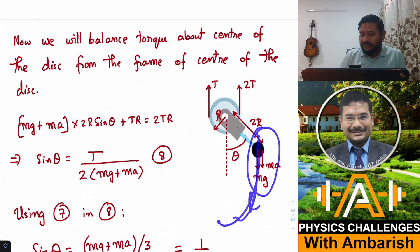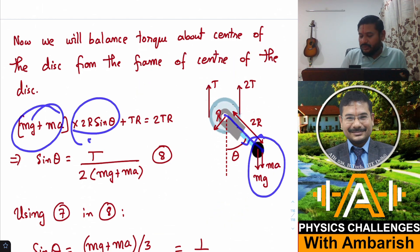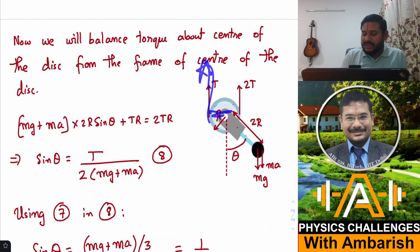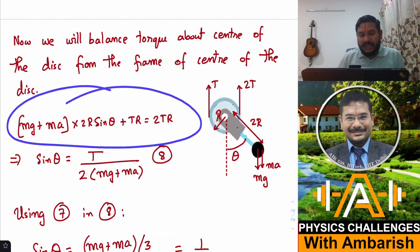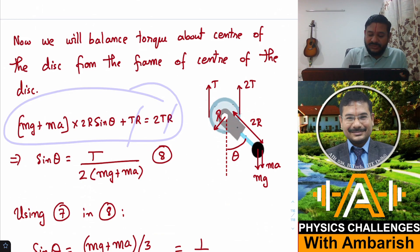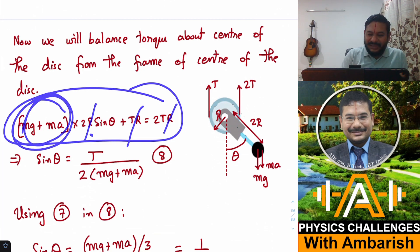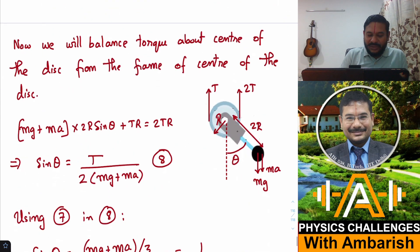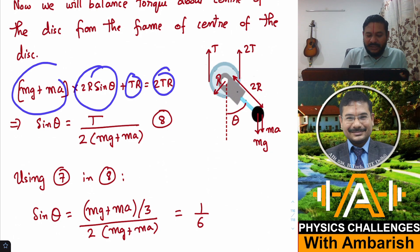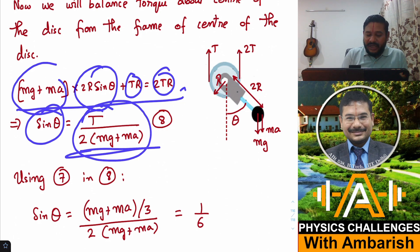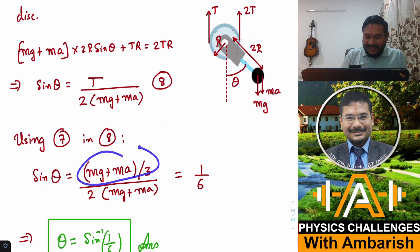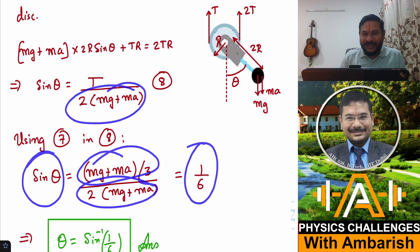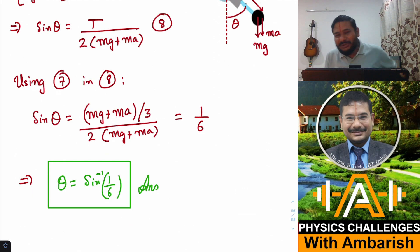The forces are: Mg and M*A acting downward (clockwise torque), T acting (clockwise torque), and 2T acting (anticlockwise torque). The perpendicular distance for Mg + MA is 2R sin θ, and for T it is R. So: (Mg + MA)*2R sin θ + T*R = 2T*R. R cancels throughout. Conveniently, Mg + MA appears directly, so substituting T = (Mg + MA)/3: sin θ = T / (2*(Mg + MA)) = 1/6. So θ = sin⁻¹(1/6), which is about 10 degrees.